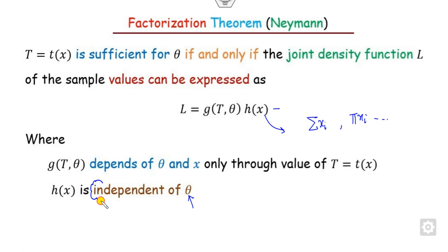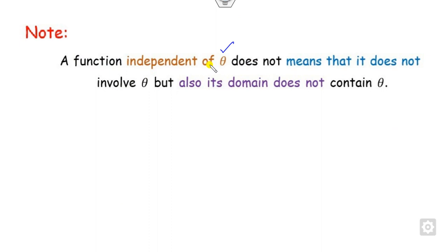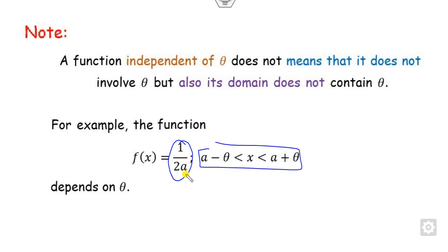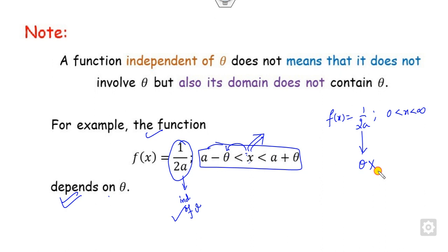An important clarification: a function being independent of the parameter does not simply mean theta does not appear in the formula. You must also check the domain. For example, if f(x) = 1/(2a) but the domain depends on theta, then f is not independent of theta. Only when both the formula and the domain are independent of theta can we say f(x) is independent of theta.